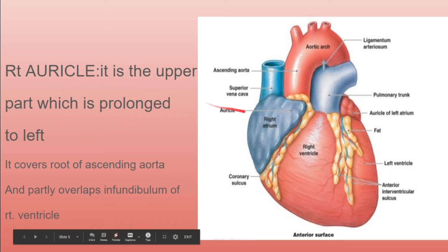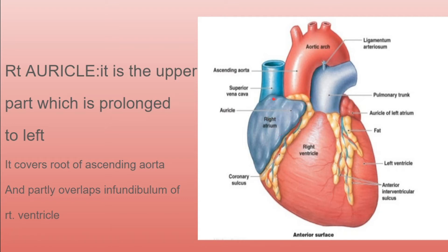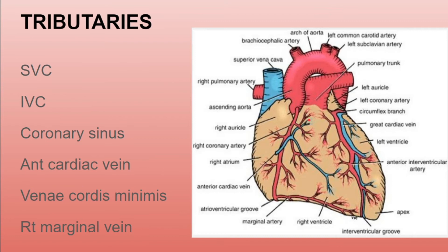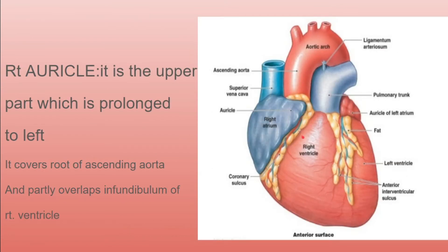The auricle of the right atrium is the upper part of the right atrium that is prolonged towards the left side of the heart. The auricle covers the roof of the ascending aorta and partly overlaps the infundibulum of the right ventricle. The marginal notch and the internal spongy part of the right atrium allow free blood flow.